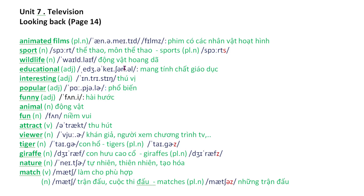'Sports' - môn thể thao, danh từ số nhiều thêm S, phát âm là 'sports'. 'Wildlife' - động vật hoang dã. 'Educational' - tính từ mang tính chất giáo dục. 'Interesting' - tính từ thú vị. 'Popular' - tính từ phổ biến. 'Funny' - tính từ hài hước. 'Animal' - danh từ động vật. 'Fun' - danh từ niềm vui. 'Attract' - động từ thu hút. 'Viewer' - khán giả hay người xem chương trình TV.